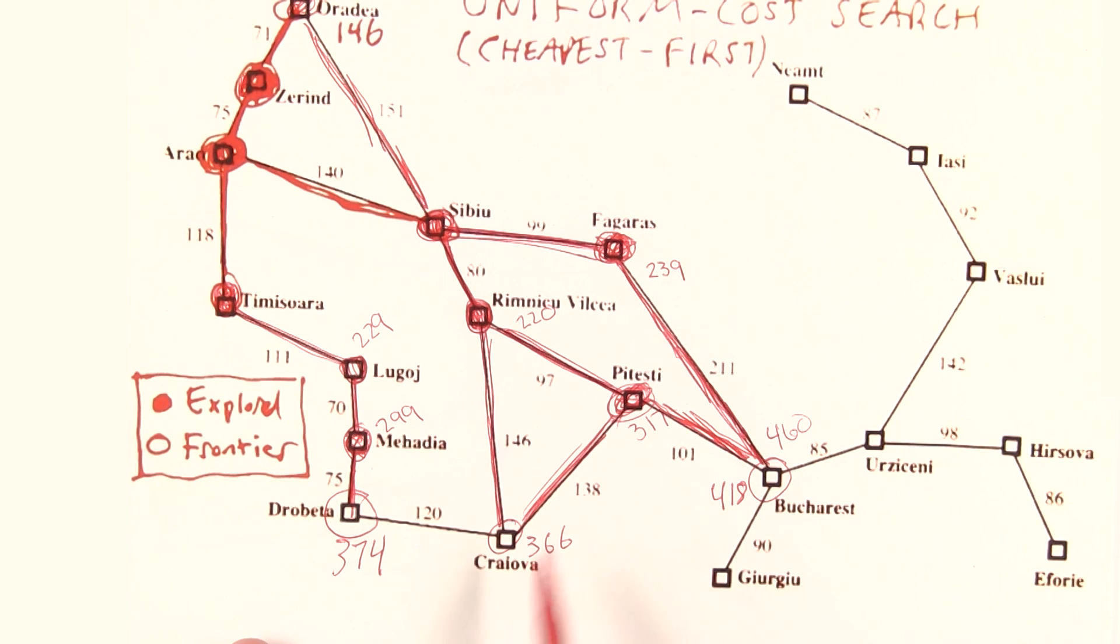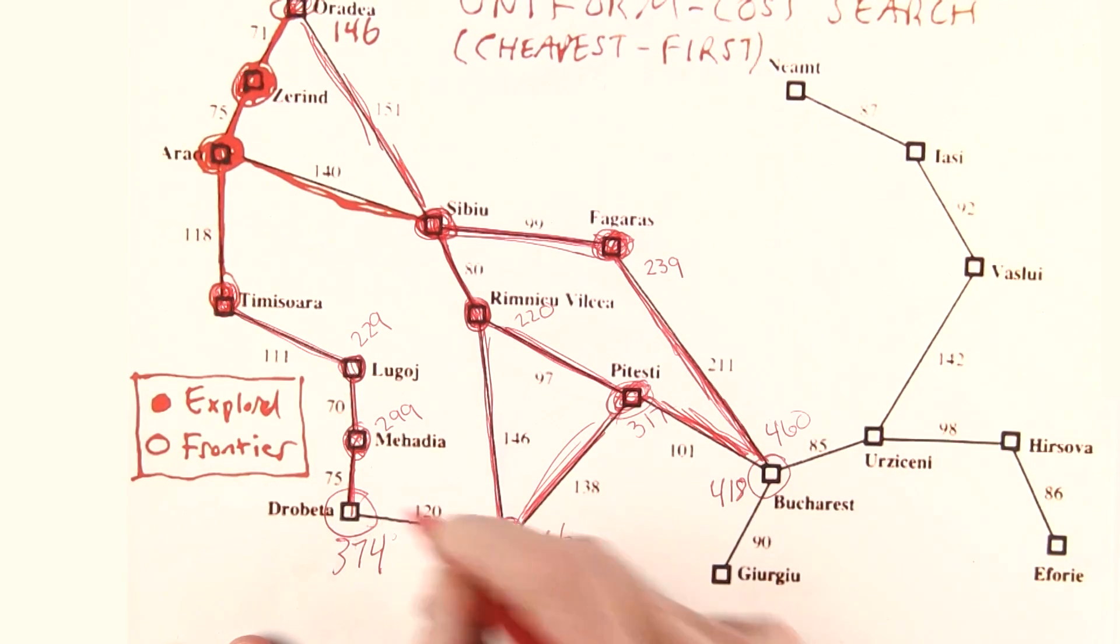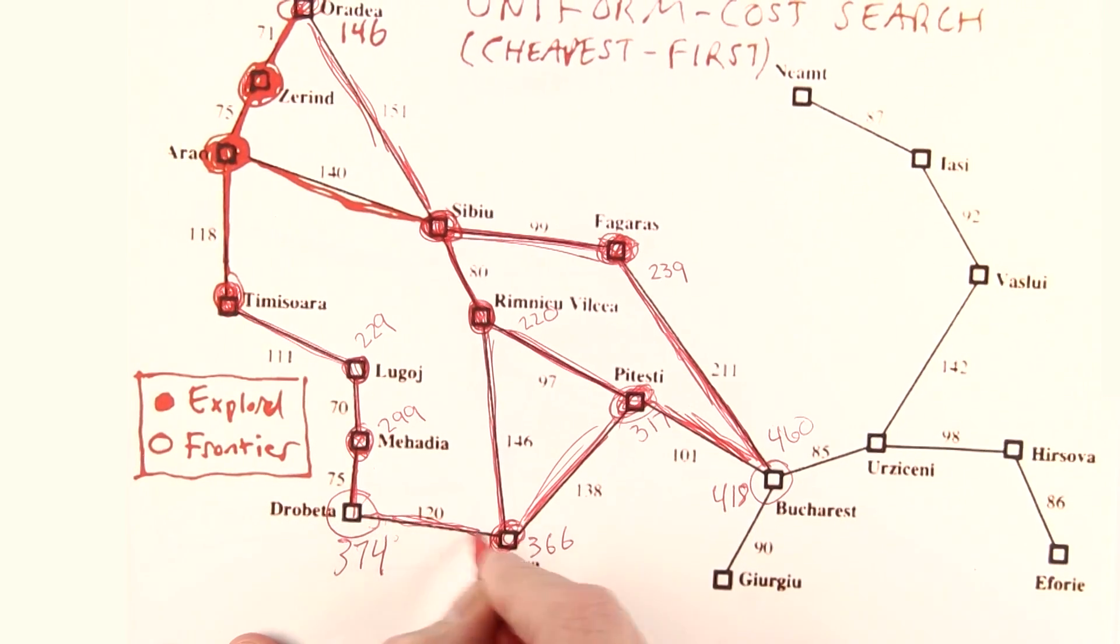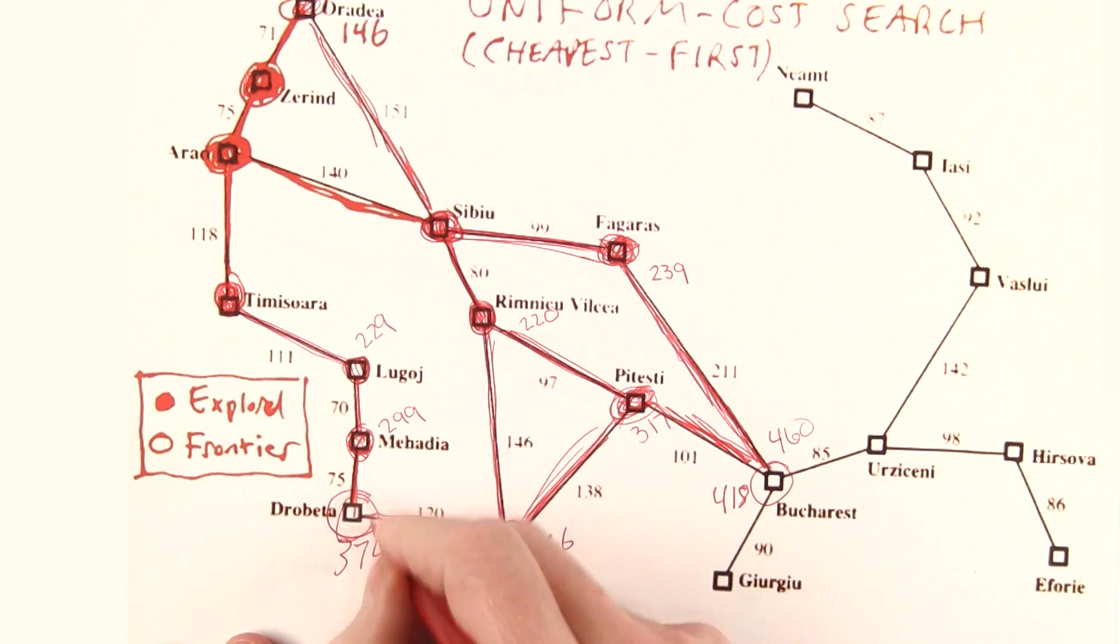What's next? Now the cheapest path on the frontier is here at 366. We expand that, and we get paths that are worse paths to points we've already seen before. So nothing new goes on the frontier. Next, the cheapest path on the frontier is at 374. Again, expanding that leads nothing useful. Only worse paths than we've seen before.